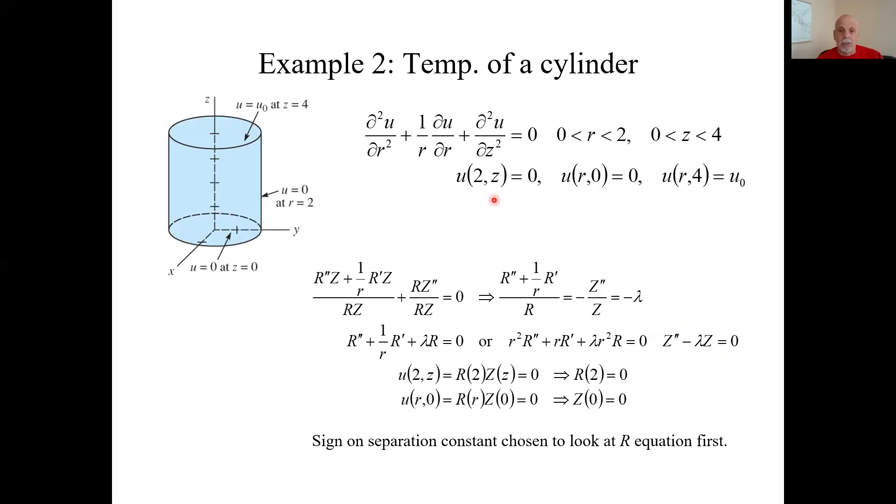Let's look at those boundary conditions. This condition. In the separated variables, it means this. And that means, since I was told for all Z, R at little r equals two must be zero. This equation is zero condition. This says Z at little z equals zero must equal zero. So those are our two zero kind of boundary conditions.